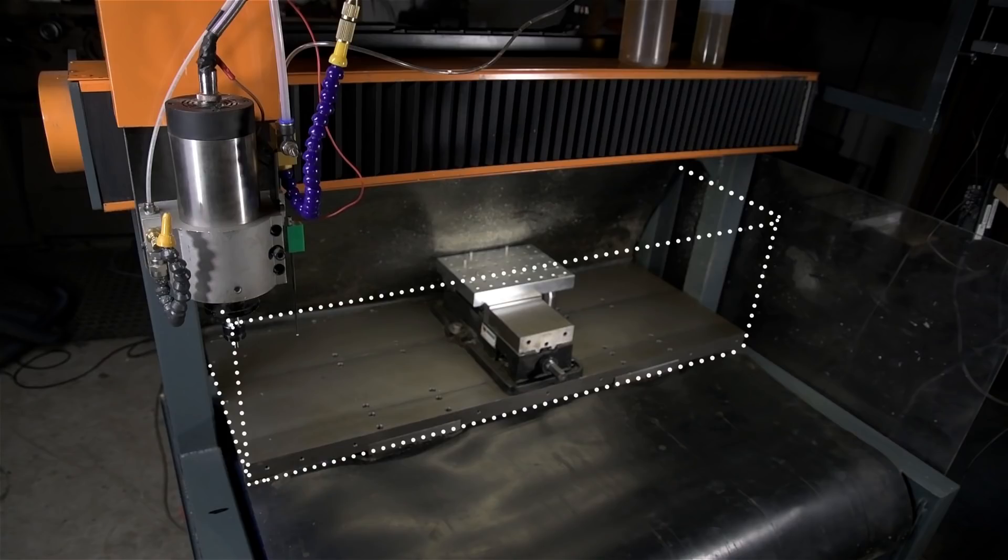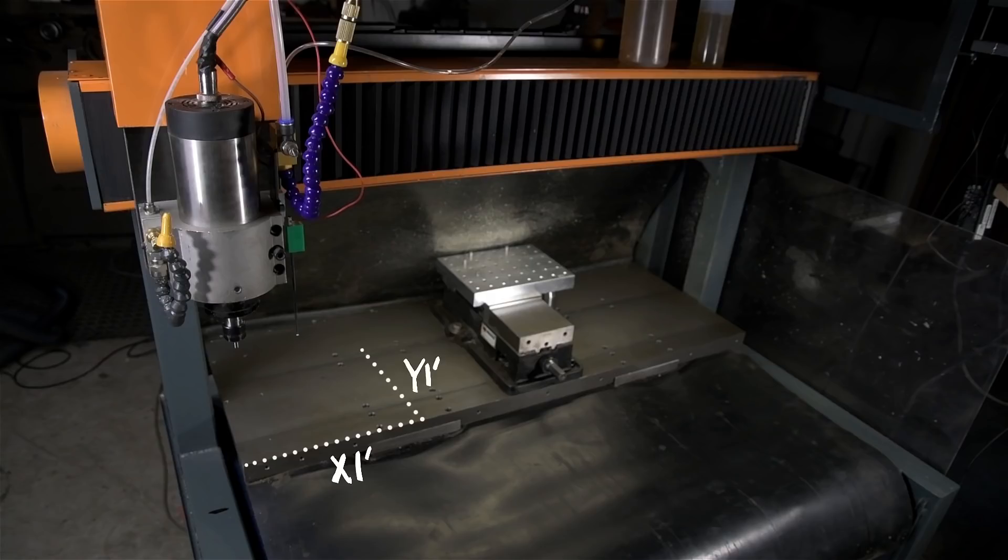All right, the machine has hit all three limit switches and established where it is in space. It knows its place in life. It has defined a box to work in with X, Y, and Z dimensions, and it's waiting in the corner. Now if the computer tells the router to go one foot in every direction, it'll move X one foot, Y one foot, and Z one foot, ending up somewhere about there.